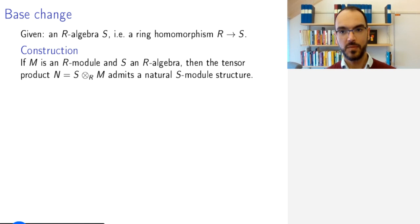What I want to do is more general than Kähler differentials. If I am given an R-algebra S—this means I have a ring homomorphism from R to S—then given an R-module M, I want to view M as an S-module.